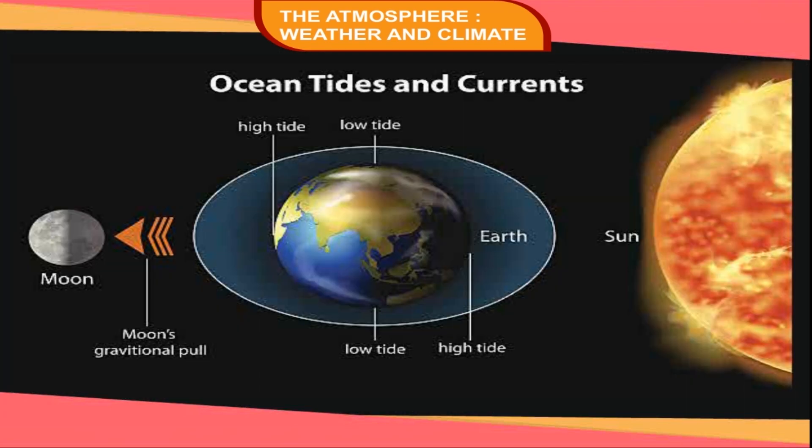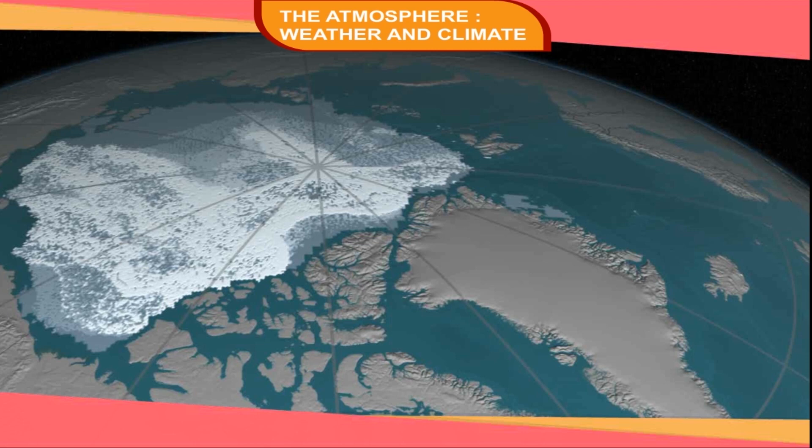Gravitational forces are stronger near the surface of Earth, and therefore the density of air is greater near its surface. As we go higher, the air starts thinning. Ultimately, it merges with space.